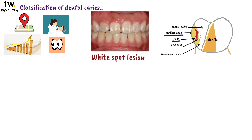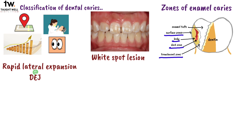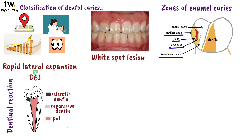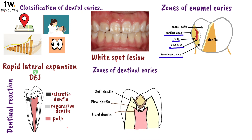That's all for this video. In recap, we learned the classification of caries according to location, clinical management strategy, rate of activity, occurrence, and depth of lesion. We looked at white spot lesions and their clinical significance, and the four zones of enamel caries: the surface zone, body of the lesion, dark zone, and translucent zone. We also covered dentinal reactions — sclerotic dentin, reparative dentin, and pulpal necrosis — and the three histological zones of dentin caries. The ideal excavation depth is until firm dentin is reached, and arrested caries lesions involve ebonated dentin.